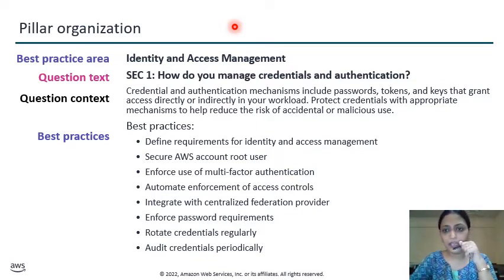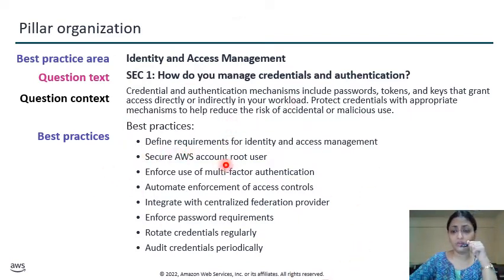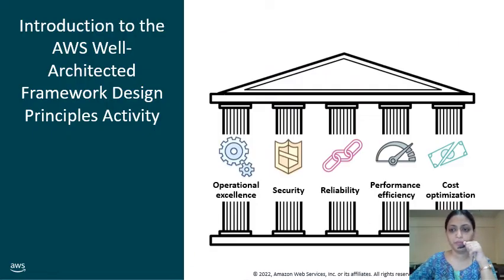In identity and access management, you get all the things required for providing security to your confidential credentials like passwords, tokens, and keys. To do this, you need to: define the requirements of identity and access management, secure your AWS account root user, enforce use of multi-factor authentication, automate enforcement of access control, integrate with a central federation provider, enforce password requirements, rotate credentials regularly, and audit credentials periodically.